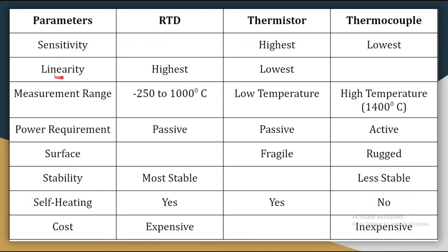The next parameter is linearity. Among RTD, thermistor, and thermocouple, RTD is the most linear. Thermistor is the least linear.